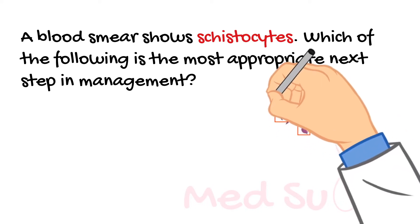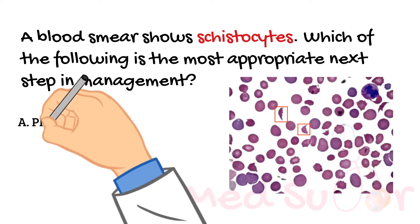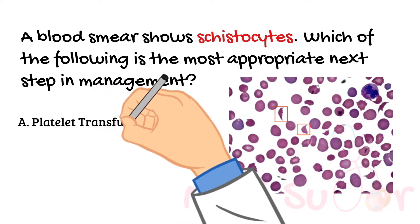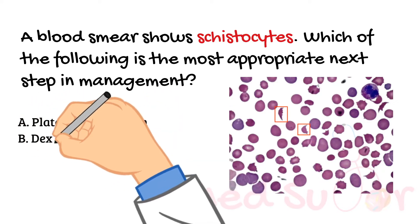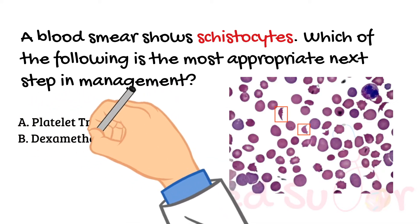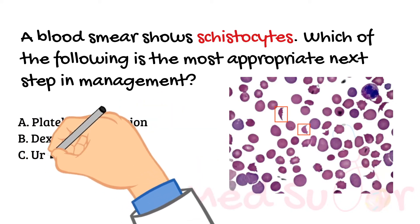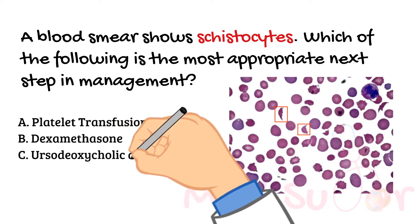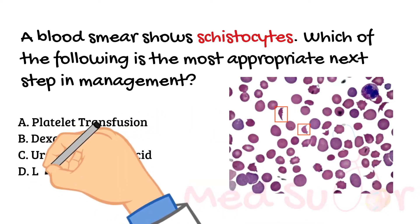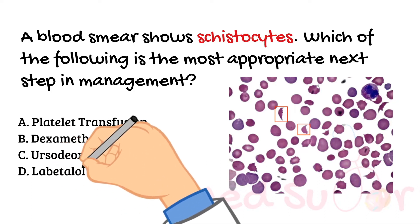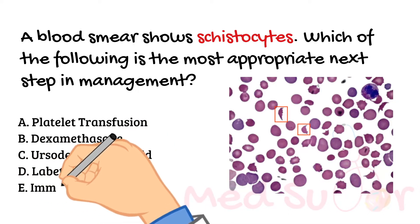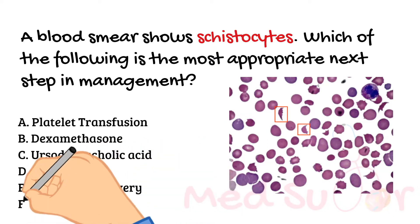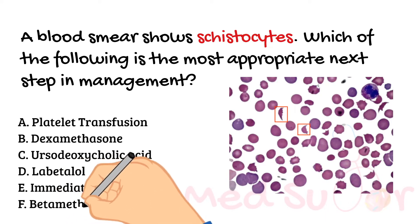I like to read next the answer choices, which help guide me to what topic this question is talking about. Here I can see the answer choices are: platelet transfusion, dexamethasone, ursodeoxycholic acid, labetalol, or immediate delivery or betamethasone and magnesium sulfate. From the answer choices, I can see that this is an obstetrics question. So what do you think causes microangiopathic hemolytic anemia in obstetrics?